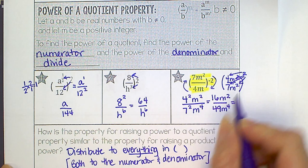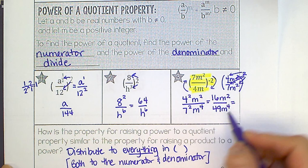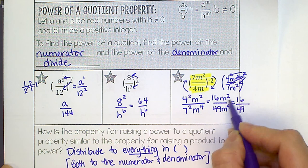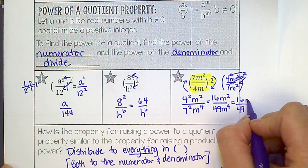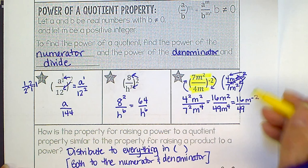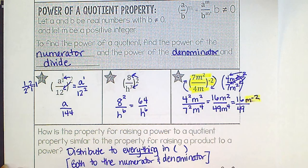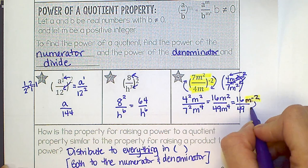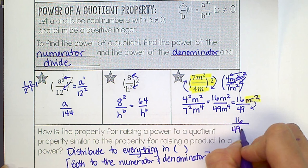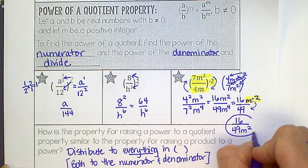So we have 16m squared over 49 m to the 4th. I cannot simplify the 16 and 49, so those stay there. But then 2 minus 4 is m to the negative 2. And last but not least, I do need to flip this down because it's negative. So our final answer is 16 over 49m squared. And that is the final answer for number 3.